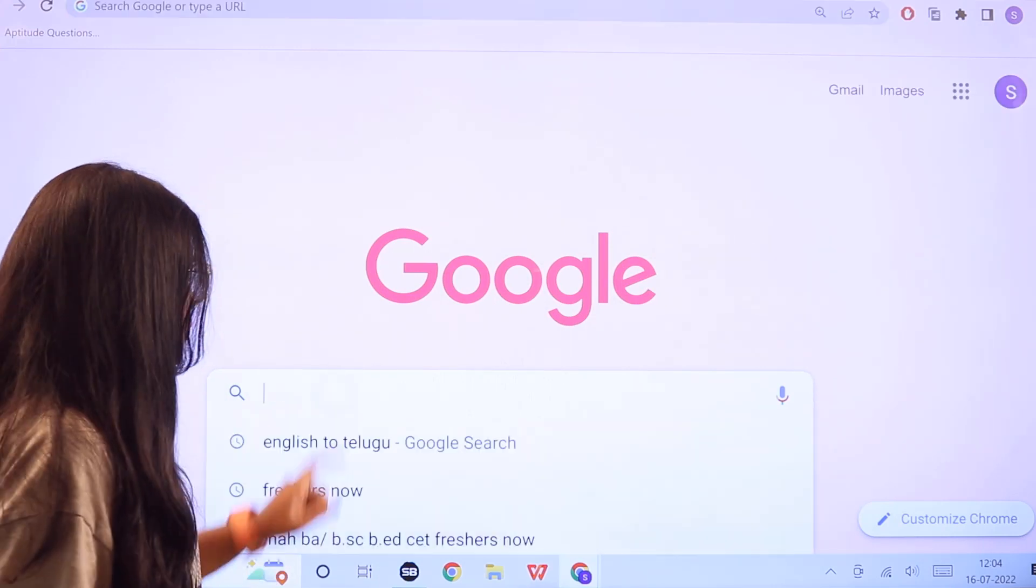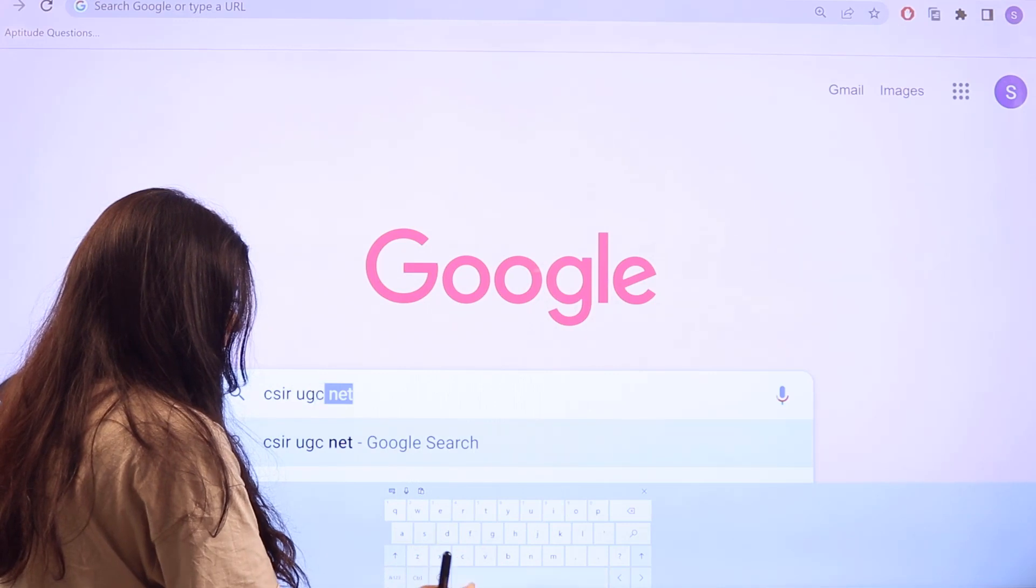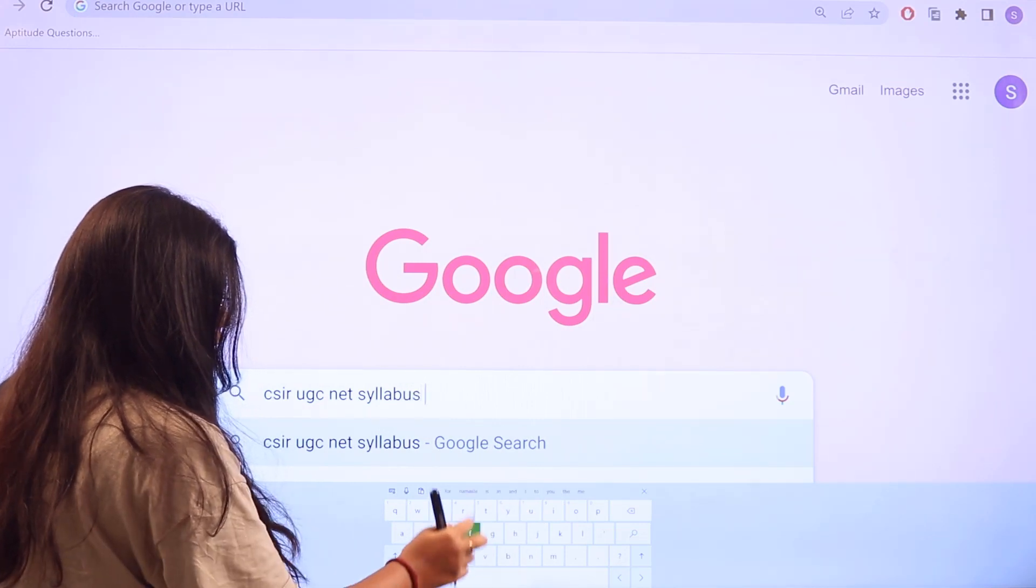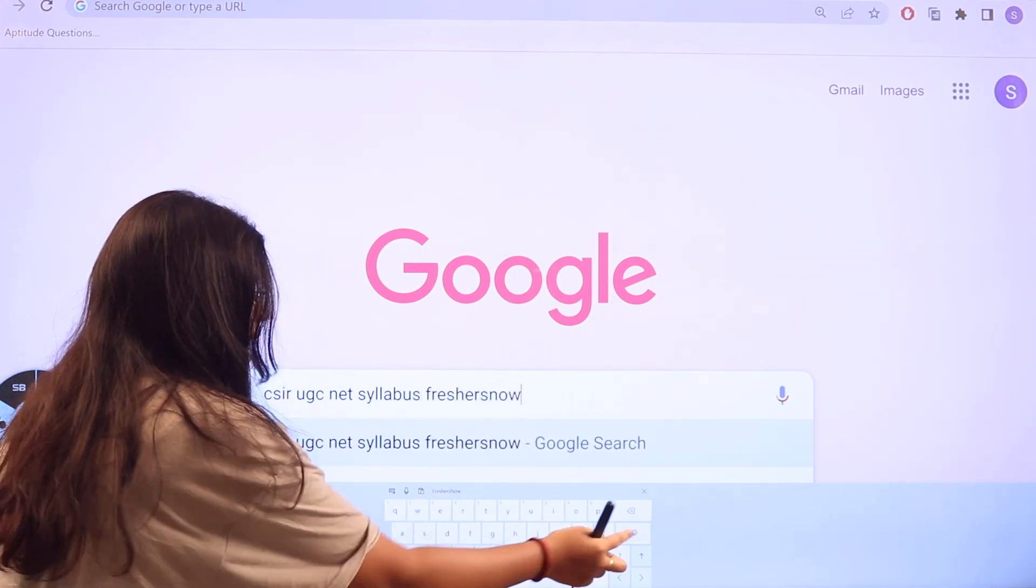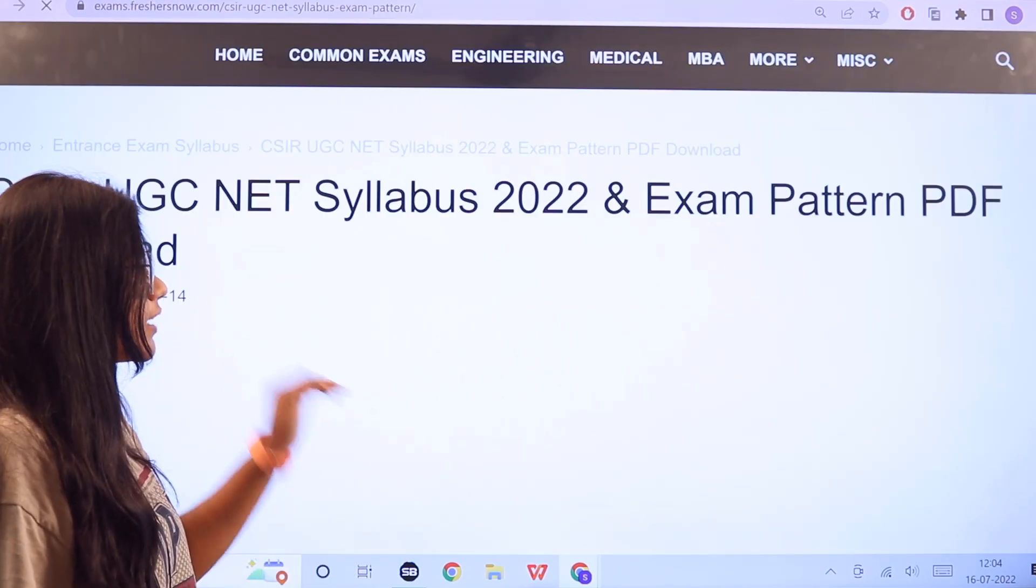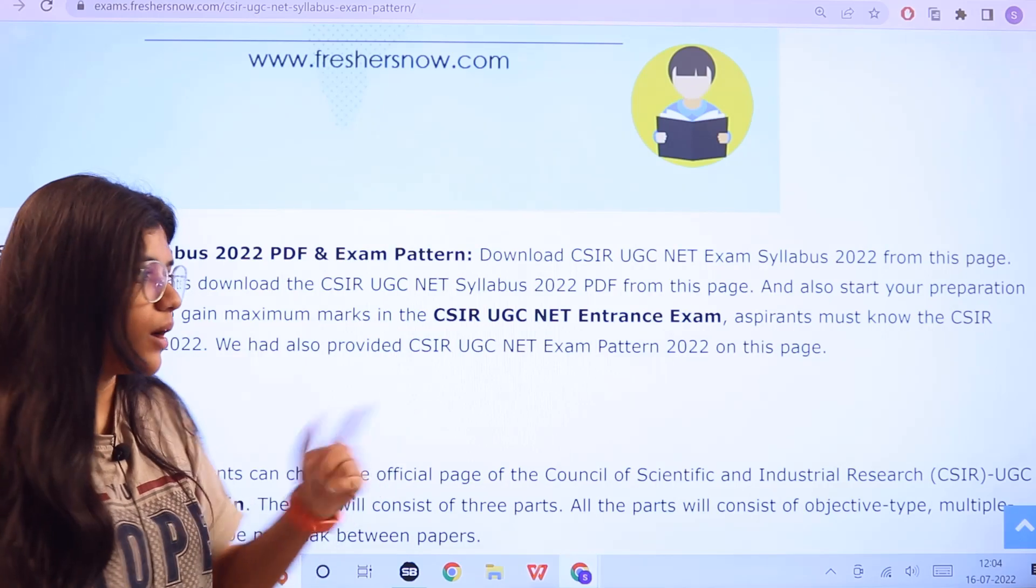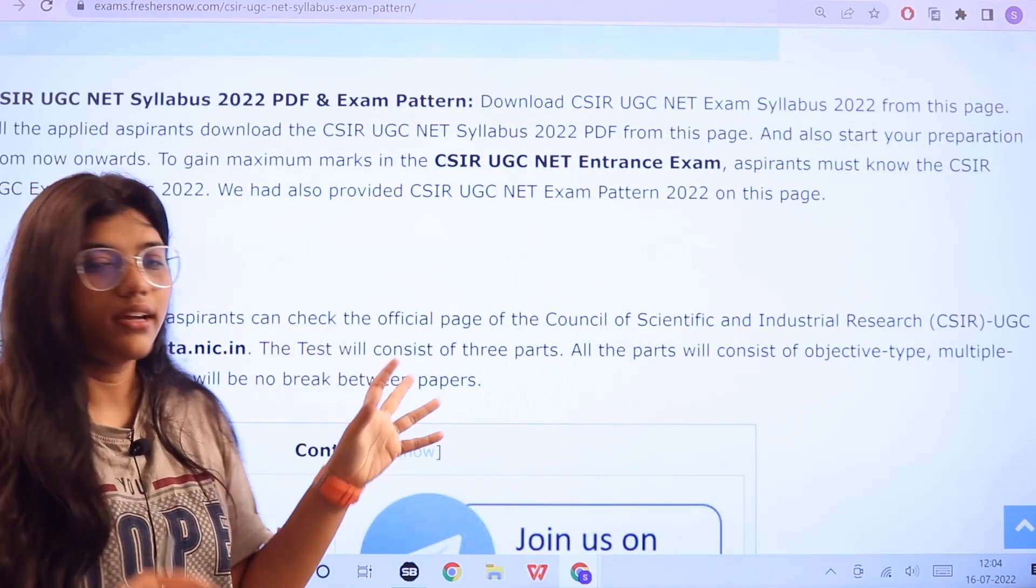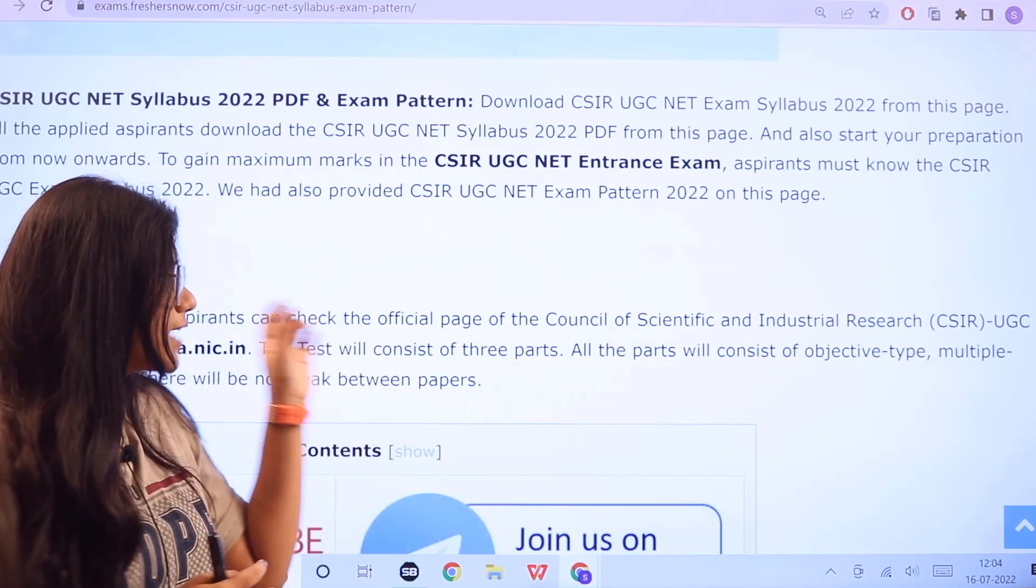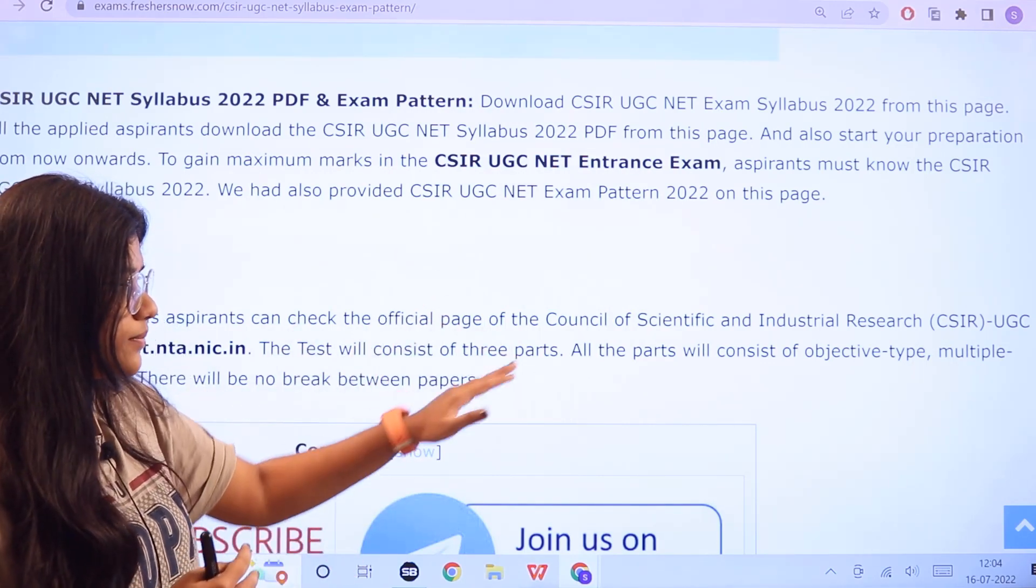All you have to do is head over to Google and search for CSIR UGC NET syllabus Freshersnow. As you search, you can see the first link itself is going to be redirecting to examstart.freshersnow.com. Give a click on this and this particular page will be opening up for you, starting off with a basic introduction about the exam.